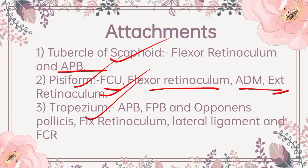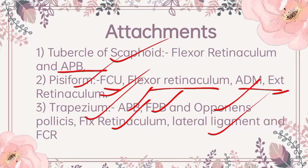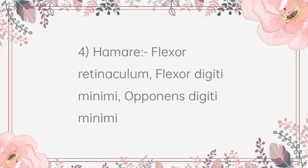Moving further to trapezium: the crest gives origin to abductor pollicis brevis, flexor pollicis brevis and opponens pollicis — these constitute the muscles of thenar eminence. The edge of the groove gives attachment to two layers of the flexor retinaculum. The lateral surface gives attachment to the lateral ligament of the wrist, and the groove lodges the tendon of flexor carpi radialis. Moving further to the hamate bone: the tip of the hook gives attachment to flexor retinaculum. The medial side of the hook gives attachment to flexor digiti minimi and opponens digiti minimi.